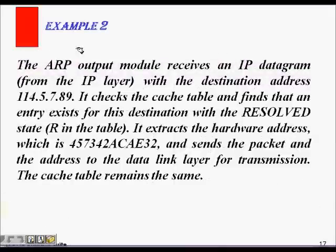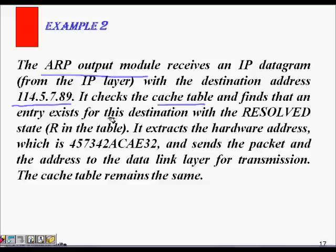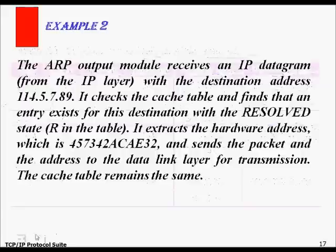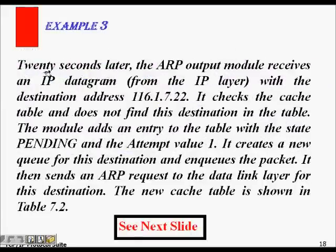Let's work through example questions using the cache table. Question one: the output module receives an IP datagram with destination address 114.5.7.89. It checks the cache table. If the state is 'R' (resolved), it extracts the hardware address and sends the packet to the data link layer. Checking the table: 114.5.7.89 is present with state 'R', so the MAC address is known and the packet is forwarded.